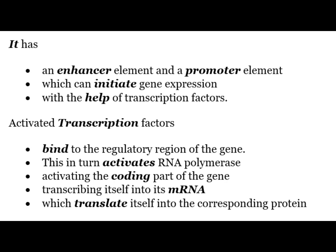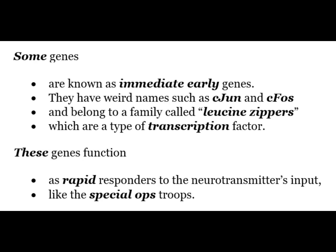Activated transcription factors bind to the regulatory region of the gene, which in turn activates RNA polymerase, activating the coding part of the gene, transcribing itself onto the mRNA which translates itself into the corresponding protein. Some genes are known as immediate early genes — they have names such as c-Jun and c-Fos and belong to a family called leucine zippers, which are a type of transcription factors.